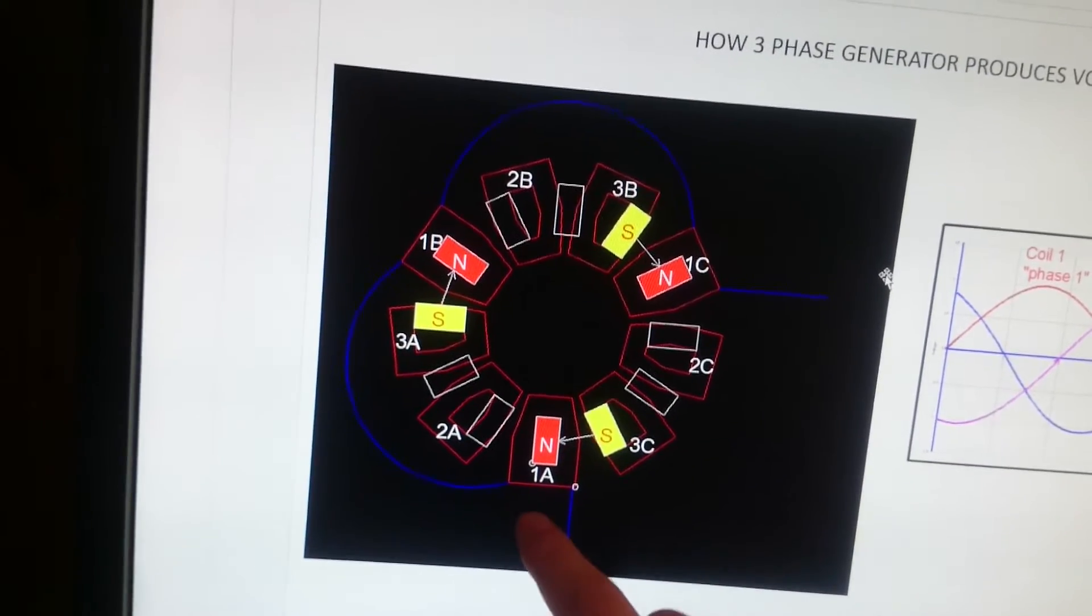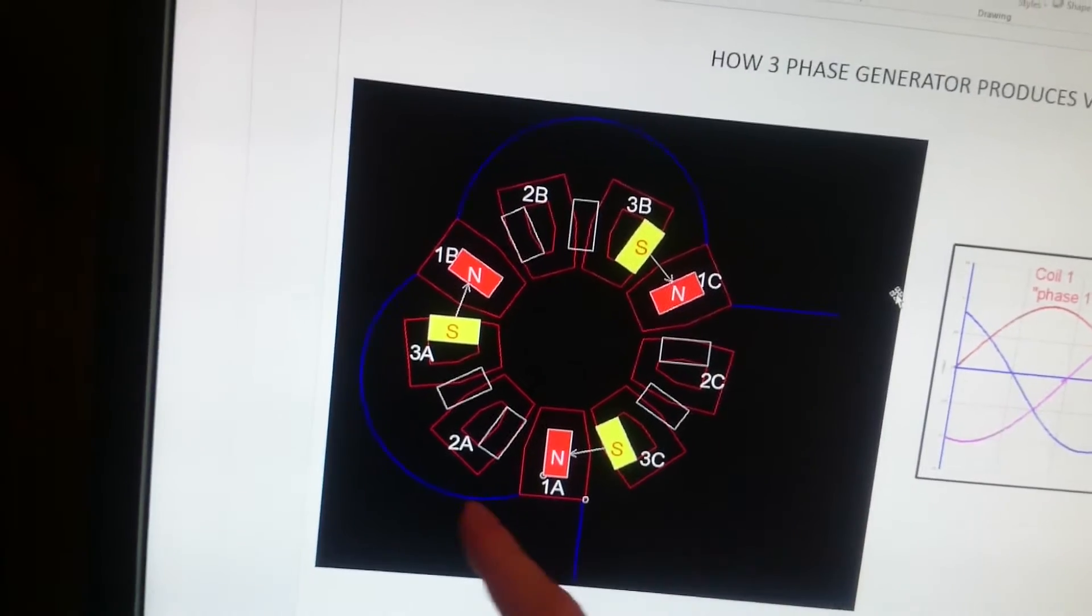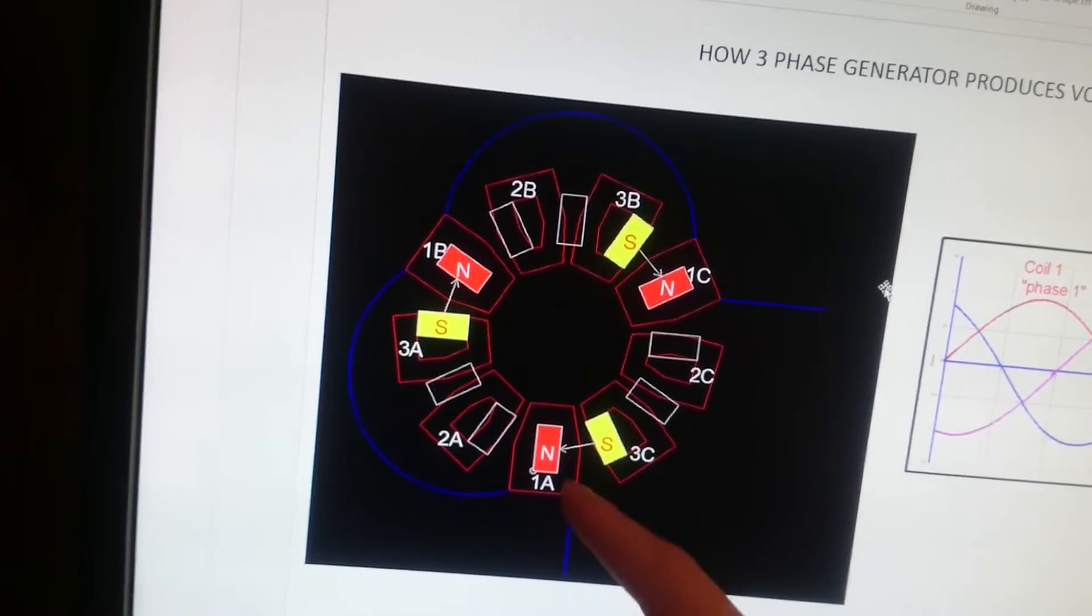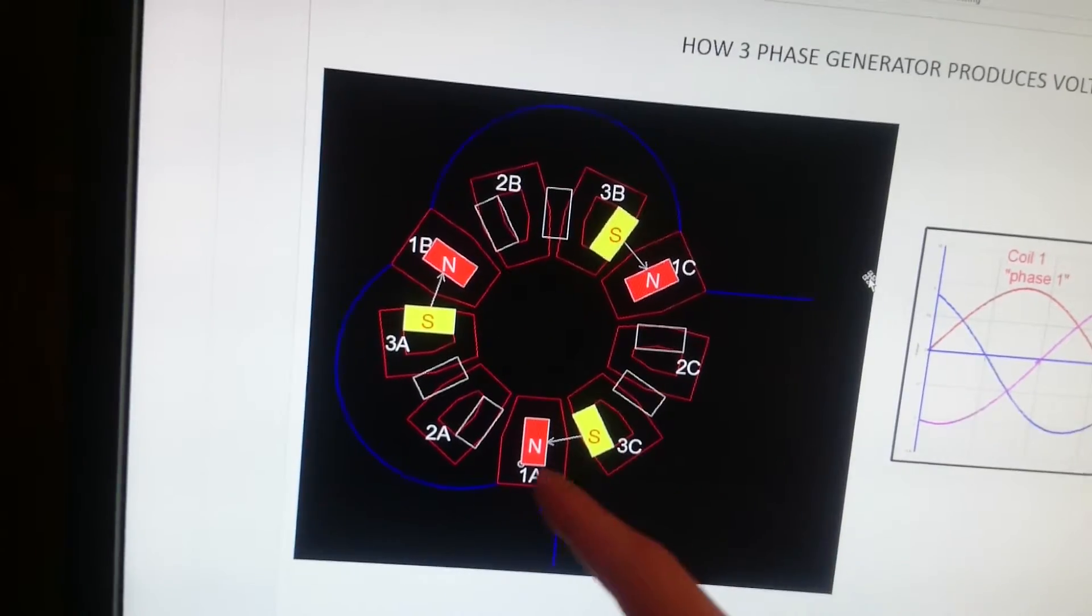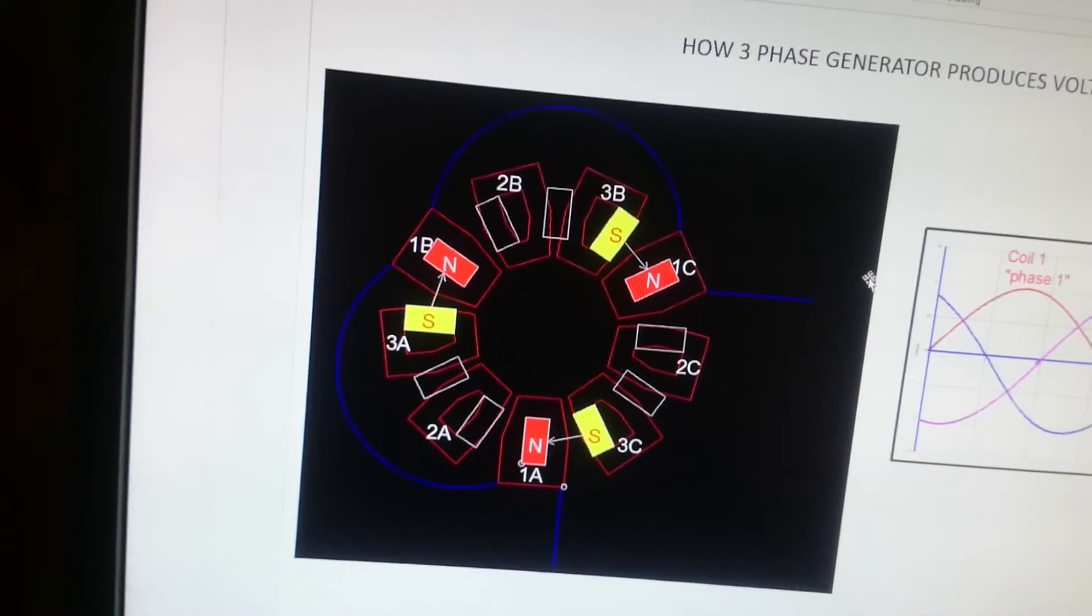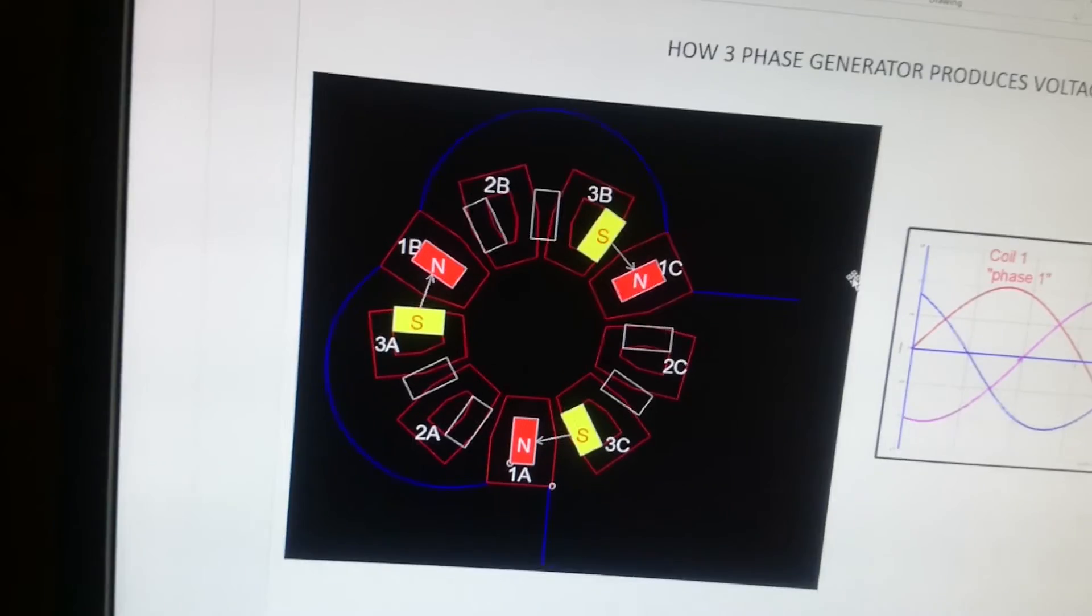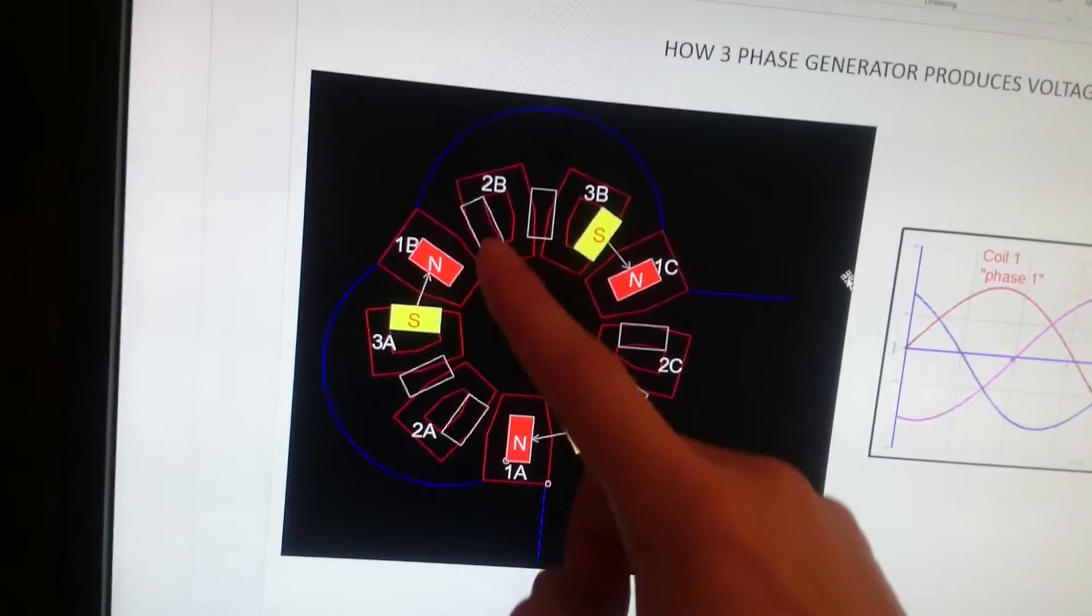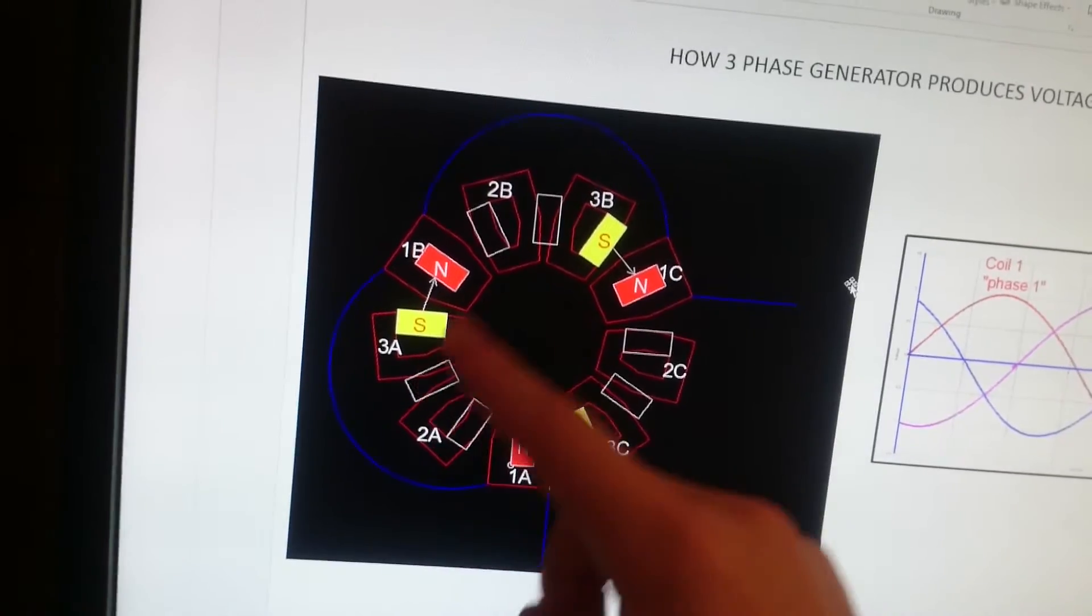What happens when these magnets move around these nine coils? Each third coil is interconnected with this blue line. These three coils represent one phase, another set 2A 2B 2C represents another phase, and 3A 3B 3C represents the last phase.